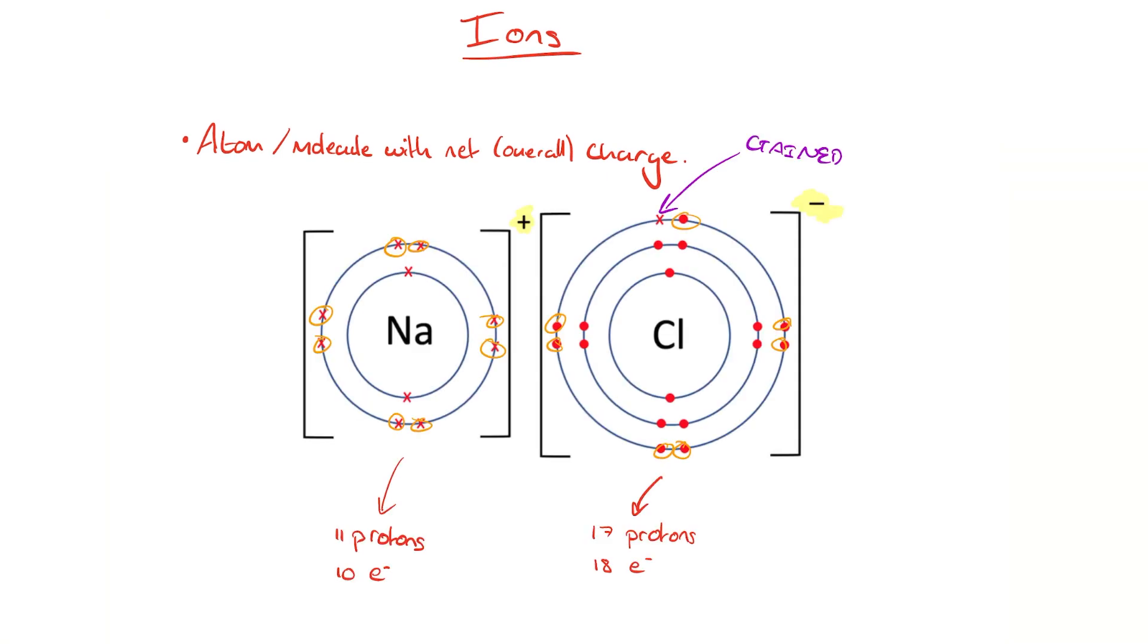Before we do that, though, let's quickly refresh our minds on what an ion actually is. An ion is an atom or a molecule with a net overall charge. This is due to the loss or the gain of one or more electrons, depending on which element or molecule we're talking about. We can have more electrons than protons or less electrons than protons to make negative and positive ions, respectively.